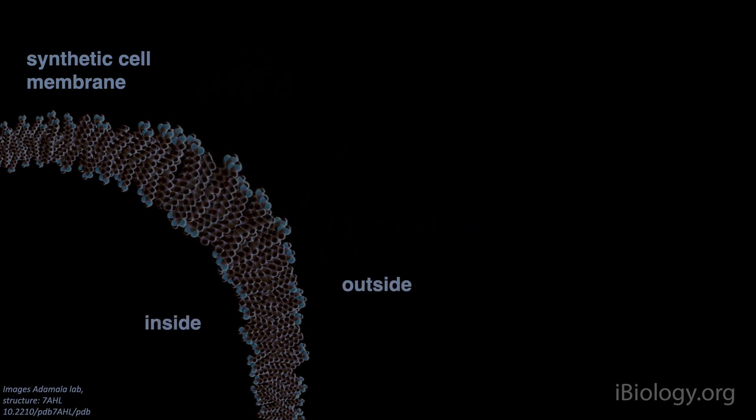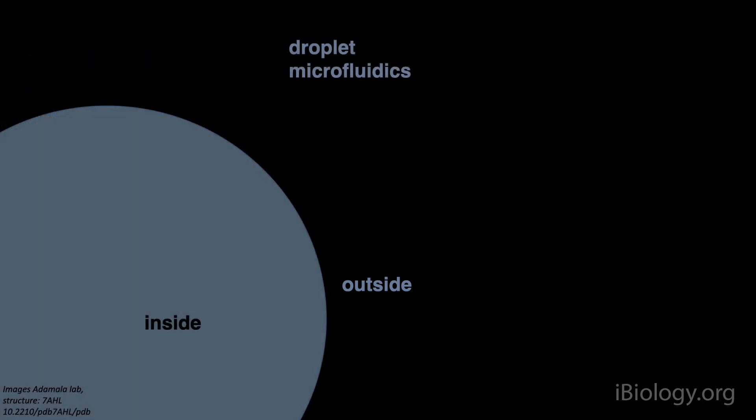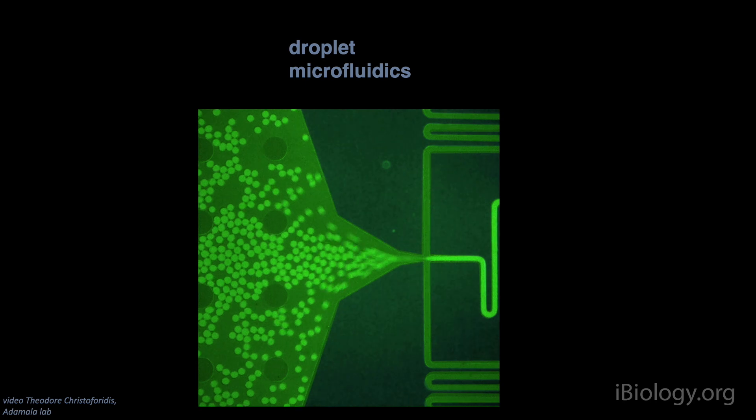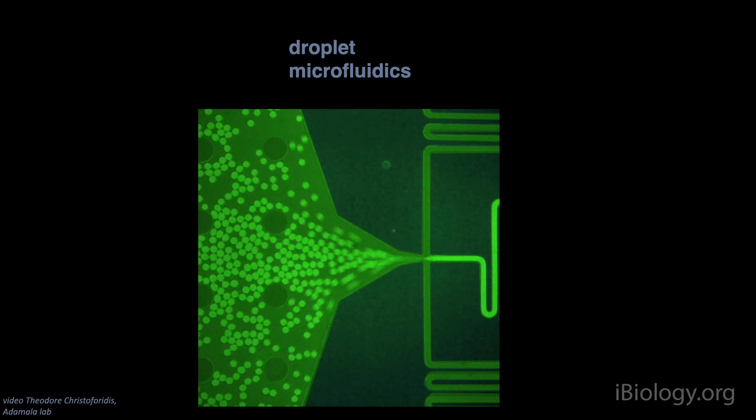Since the main point of having a membrane is to separate self from the environment, the inside of the synthetic cell from the outside, a synthetic cell can also be made in a droplet, a drop of water surrounded by oil phase. Millions of droplets can be made at the same time in a so-called droplet microfluidic system.